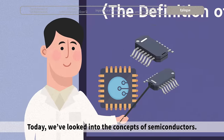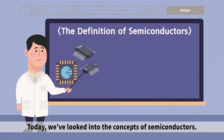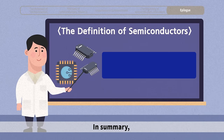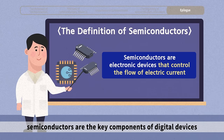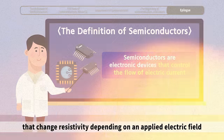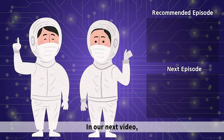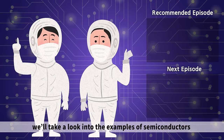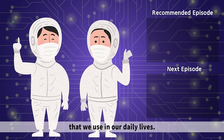Today, we looked into the concepts of semiconductors. In summary, semiconductors are the key components of digital devices that change resistivity depending on an applied electric field. In our next video, we'll take a look into the examples of semiconductors that we use in our daily lives.